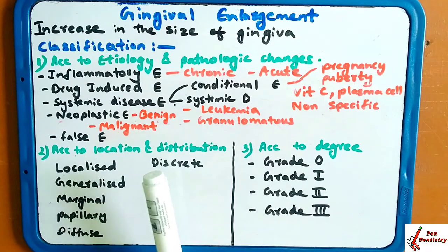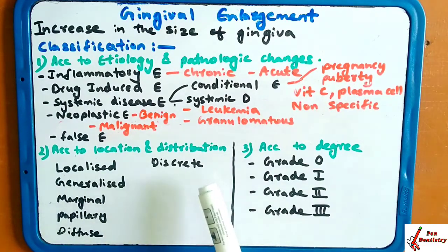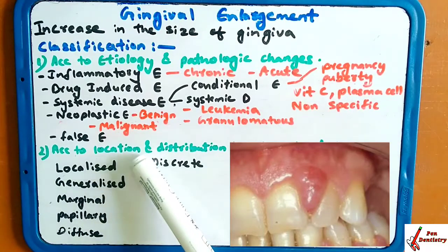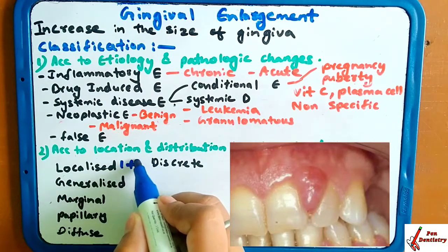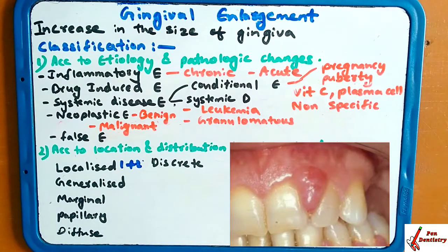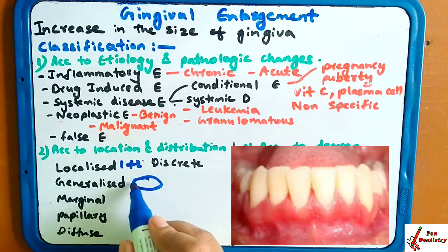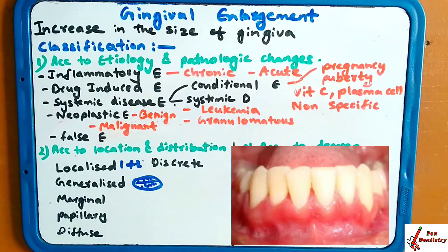The second classification is according to location and distribution — which location is affected and how much the gingival enlargement is distributed. The first is localized, meaning gingival enlargement is limited to one or more teeth. The second is generalized, where the entire mouth — the whole mouth — has gingival enlargement.